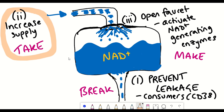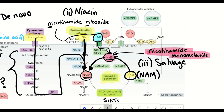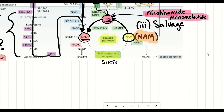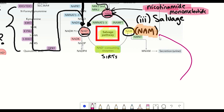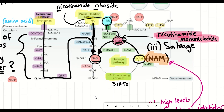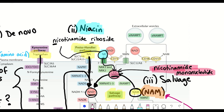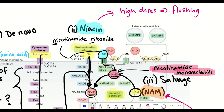Let's start with the 'take' strategies — supplementing NAD+ levels — since that's where we have the most information. One option is to supplement with nicotinamide, since it can be converted back to NAD+ by the salvage pathway. However, at high levels, nicotinamide seems to act as a feedback inhibitor of NAD+-dependent enzymes, including PARPs and sirtuins. An alternative is niacin, which is already commonly found in multivitamins, though there are concerns at high doses — in particular, it can cause flushing of the skin.